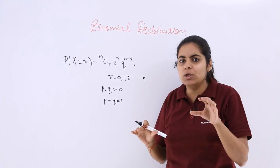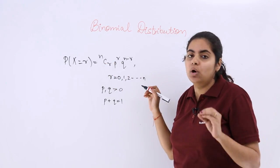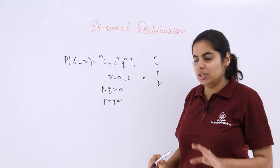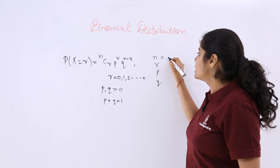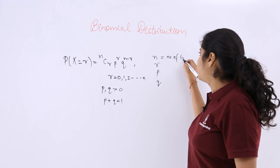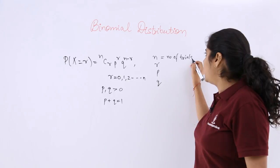Now let's understand the terminology. n, r, p, q are in the picture. n is the number of trials - the total number of trials.